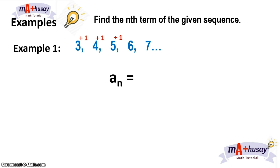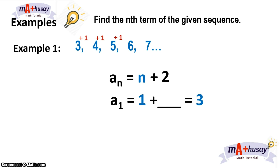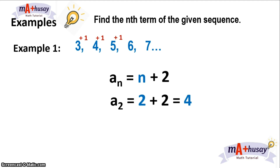Now, if a sub 1 equals the first term, and n is 1, then 1 plus blank should give you 3. What number do we add to 1 to get 3? We add 2. So 1 plus 2 gives you 3, which is the first term. Therefore, the nth term or general term is a sub n equals n plus 2. We still have to test if it holds true for n equals 2. Let's check: when n is 2, 2 plus 2 is 4. That's correct.